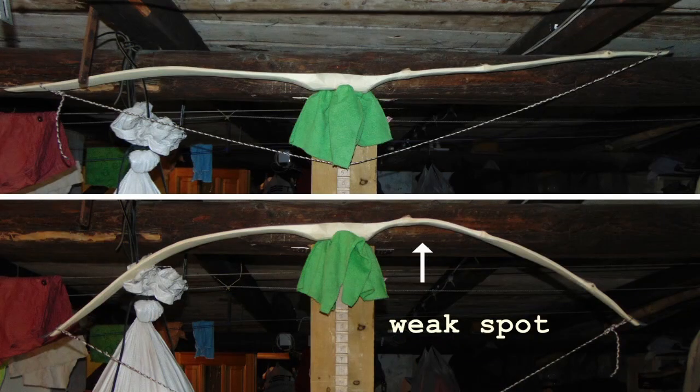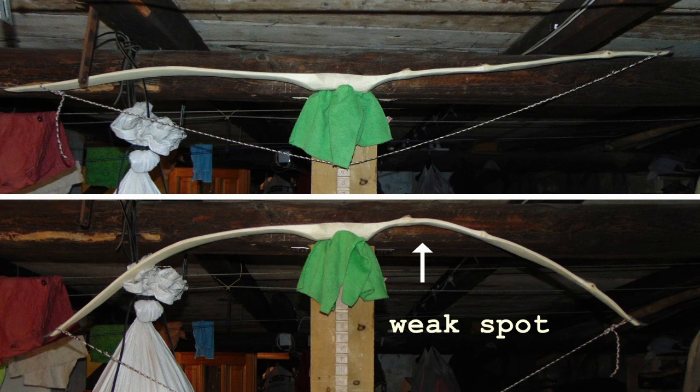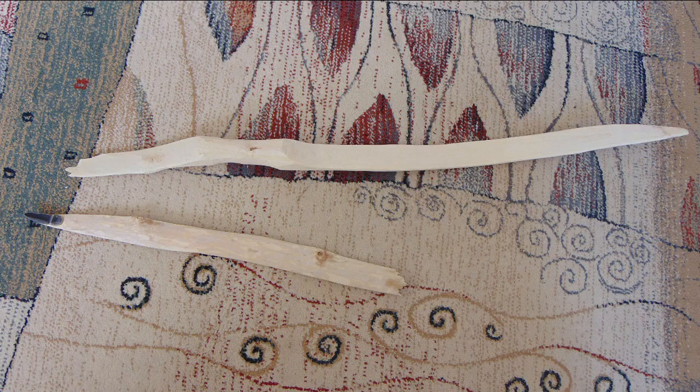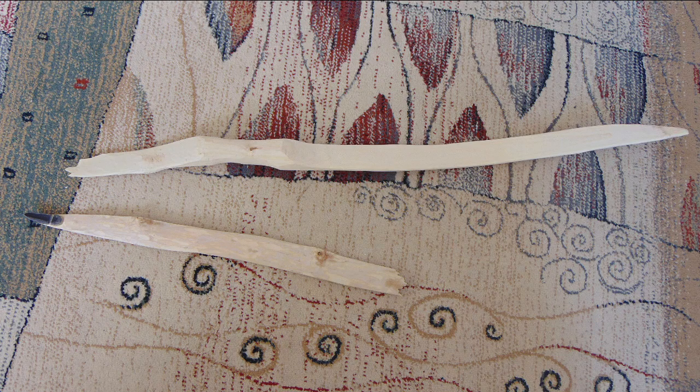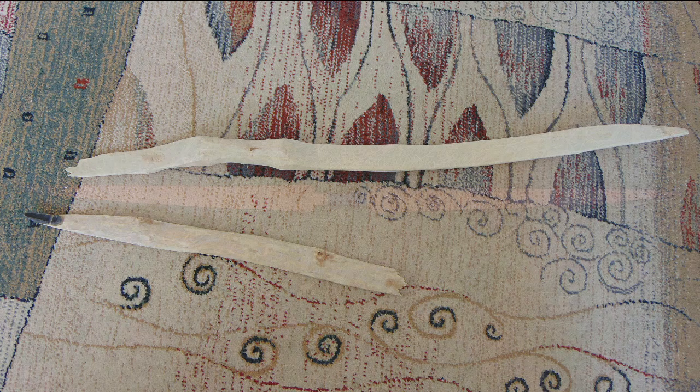The next one is maple flat bow. As you can see, there was a serious weak spot just behind the handle. It was also one of my older builds and I haven't noticed the weak point early enough. This one wasn't so lucky and it ended up as firewood.